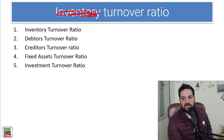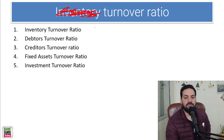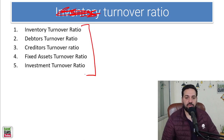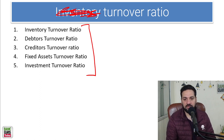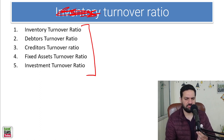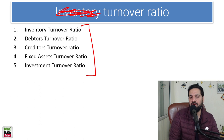These are turnover ratios — not just inventory turnover. We are going to do five turnover ratios: inventory turnover ratio, debtor turnover ratio, credit turnover ratio, and fixed asset turnover ratio. Basically four ratios. So that's what we are going to do today.